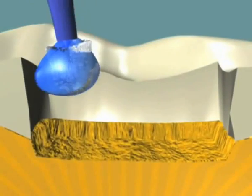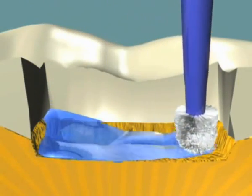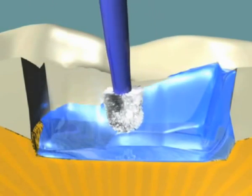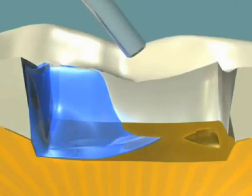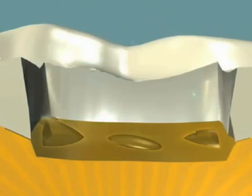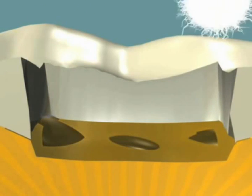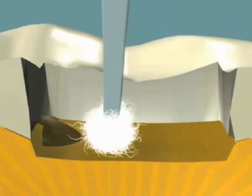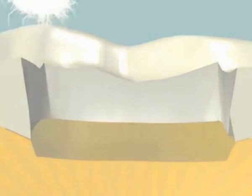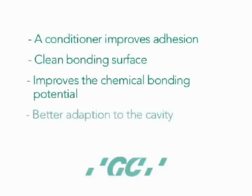Prior to placement of the glass ionomer, it is helpful to prepare the cavity surface by applying a polyacrylic acid conditioner. After 10 seconds, the conditioner is washed off, removing the smear layer and surface debris. Excess water is then removed without over-drying the surface. Using a conditioner improves adhesion in three ways: it creates a clean bonding surface, it improves the chemical bonding potential of the glass ionomer cement, and it alters the surface energy of the tooth so that the cement can wet and adapt the cavity more effectively.